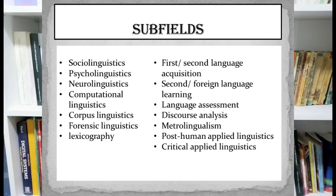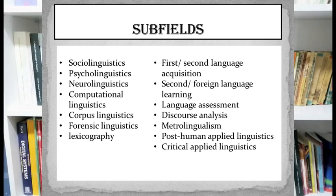As a result of addressing such a varied multitude of problems, many applied linguists feel overwhelmed and decide to specialize in one single area. Consequently, applied linguistics started to be divided into specific subfields, each focusing on one single area at a time. These subfields include sociolinguistics, psycholinguistics, neurolinguistics, computational linguistics, corpus linguistics, forensic linguistics, first and second language acquisition, second language learning and language teaching, multilingualism, language assessment, discourse analysis, critical applied linguistics, metrolingualism, lexicography, post-human linguistics — and the field is still growing.